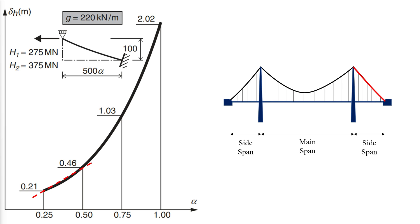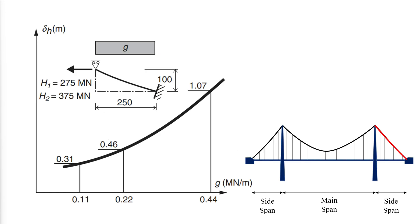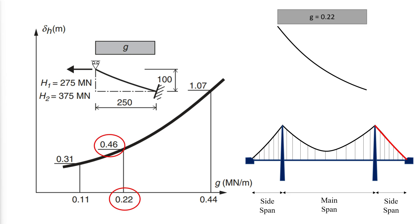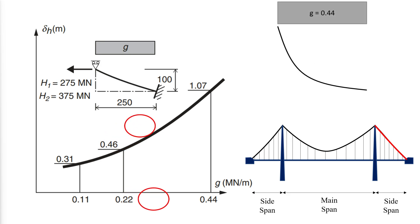Previously it was described how increased dead load improves the deformational characteristics of the single-span cable. However, in the case of a side span cable, the dead load will have the opposite effect, as illustrated for a side span cable with a span of 250 meters. A doubling of the dead load from 220 kN per meter to 450 kN per meter will more than double the longitudinal displacement, which is due to the sag variations, as the initial sag will be larger when the side span dead load is increased.